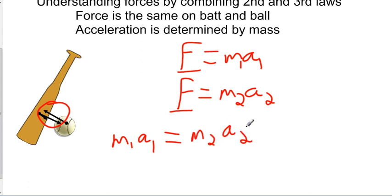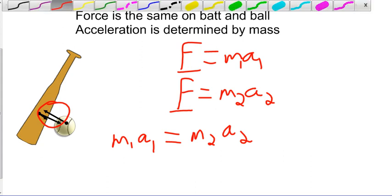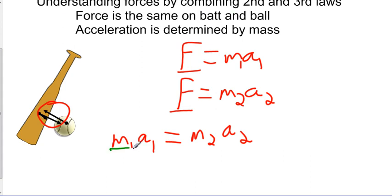You might be wondering how this works, because the accelerations are so different when someone hits a ball. The reason is because of the masses — the masses are so different that the accelerations are also different. This is an inverse relationship: if the force remains constant and we increase the mass, the acceleration must decrease. As one increases, the other decreases.